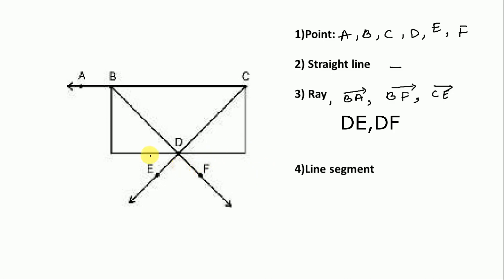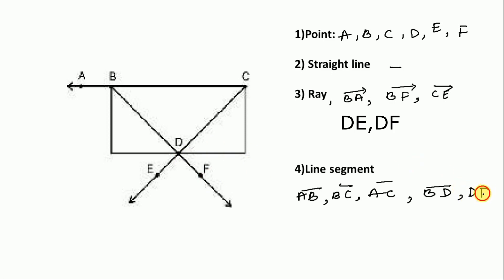For line segments, we see two endpoints. Here AB, BC, AC, BD, BF, and on the other side FB or BF. Then CD, CE, and last one DE. These are the line segments. The second figure is over.